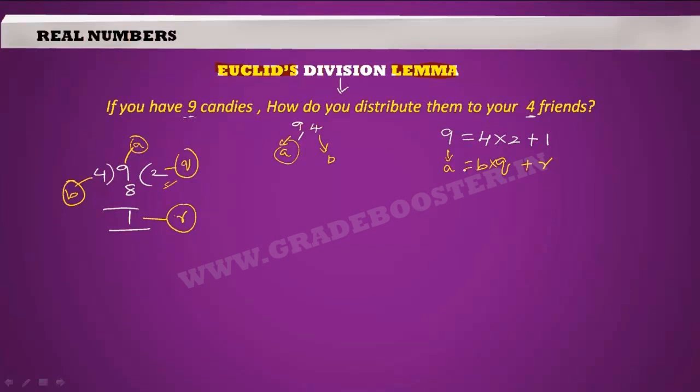Here we observed an interesting fact about division: dividend is always equal to divisor into quotient plus remainder. Let us write our first observation in the form of an equation. A is equal to B into Q plus R.